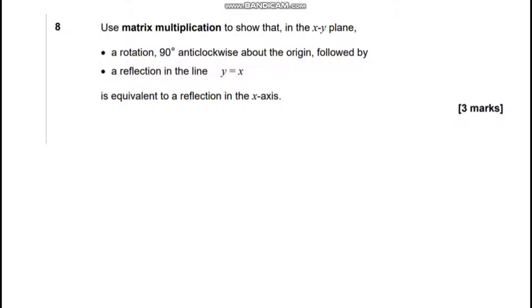In this video we're going to be looking at question 8 from the 2022 paper 1 for the Further Maths GCSE. Using matrix multiplication, show that rotation by 90 degrees anti-clockwise, followed by a reflection in the line y equals x is equivalent to a reflection in the x-axis.